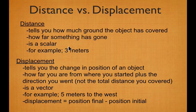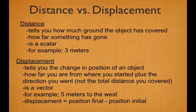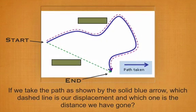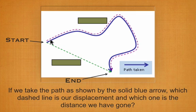Distance is a scalar — it just tells you how far you went. Displacement tells you your change in position and it is a vector because it has a direction included. Here's an example: we started here, walked along this purple path, and ended right here. The question is: what's our distance and what's our displacement?